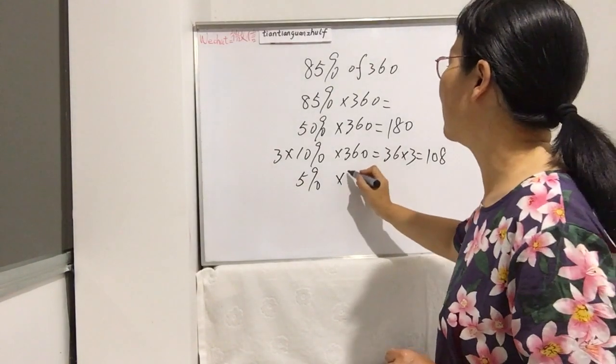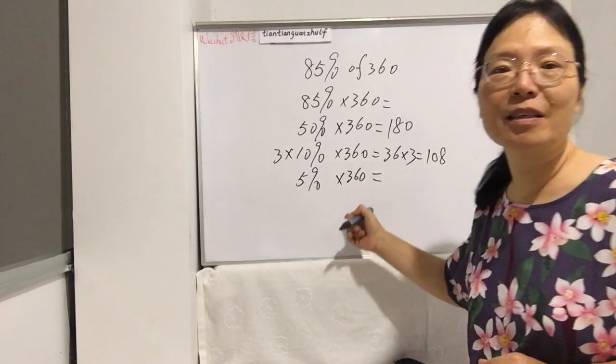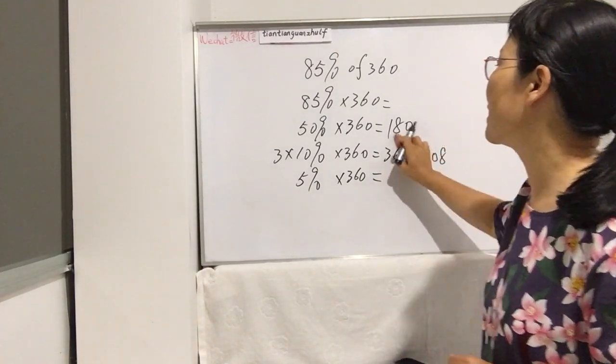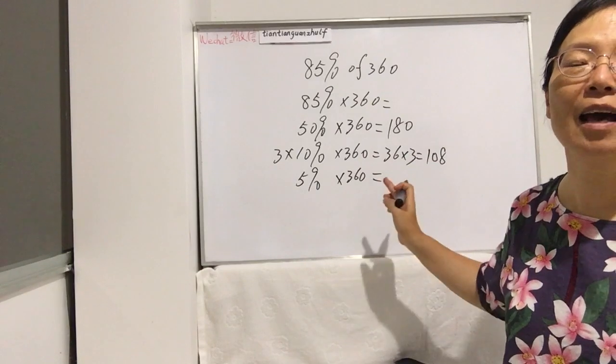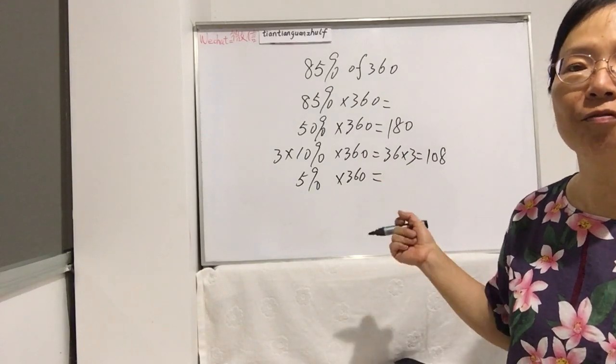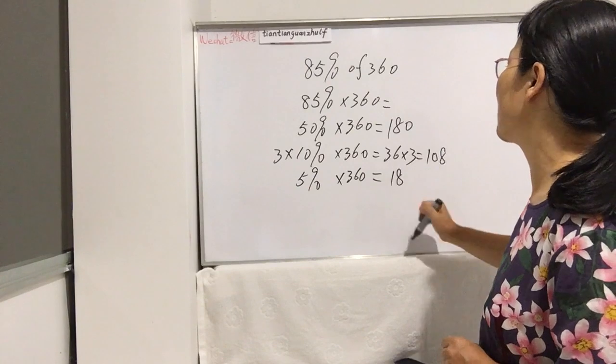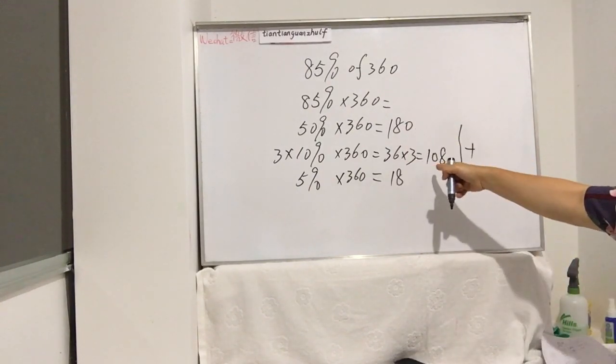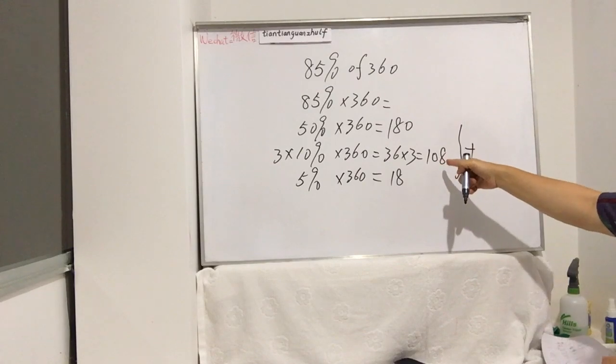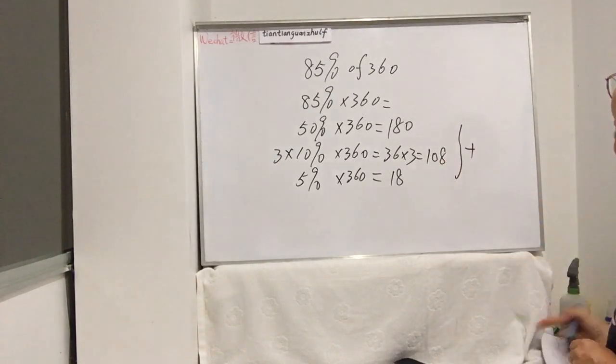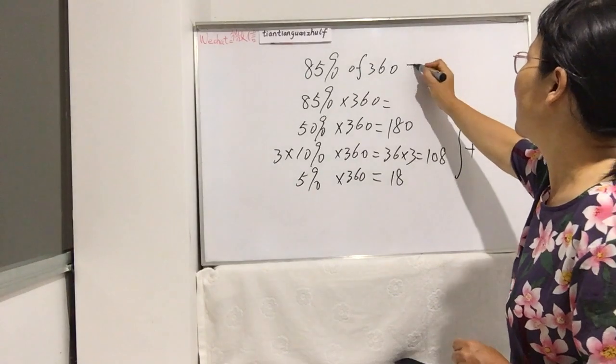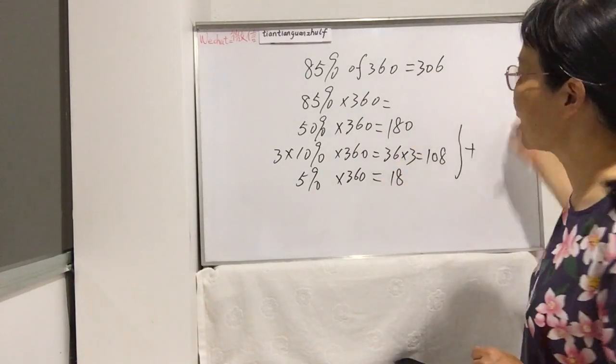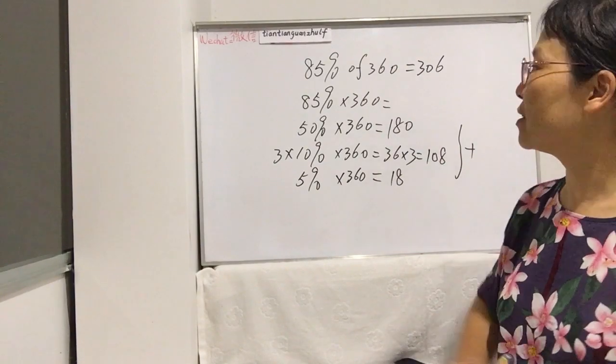And now let's work 5%. 5% is actually half of 10%. If 10% is 36, now half of that, 5%, is 18. So we add up these three numbers: 180 plus 108 plus 18 together is 306.